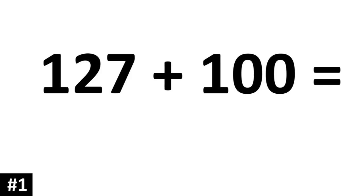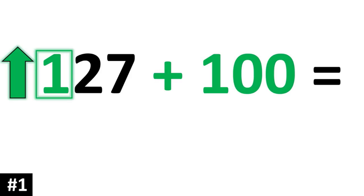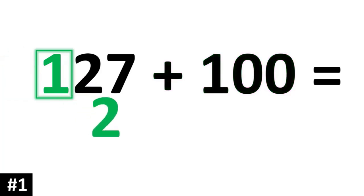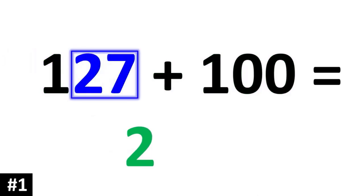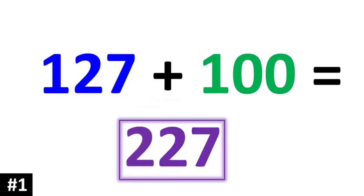Let's take a look at our first example: 127 plus 100. First we ask, what is the hundreds digit of 127? It is the 1, and to add by 100 means that 1 is going to go up to 2. The other numbers remain the same, so 127 plus 100 is 227.